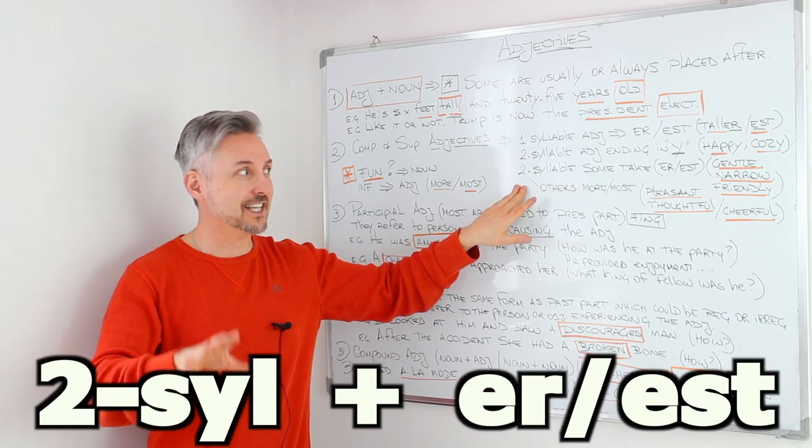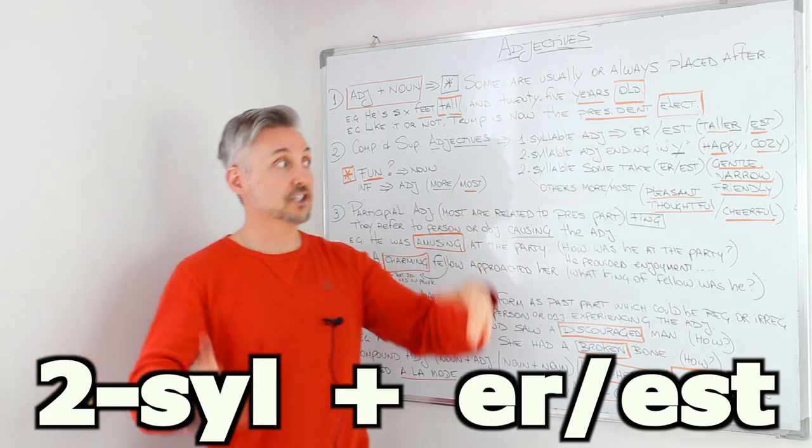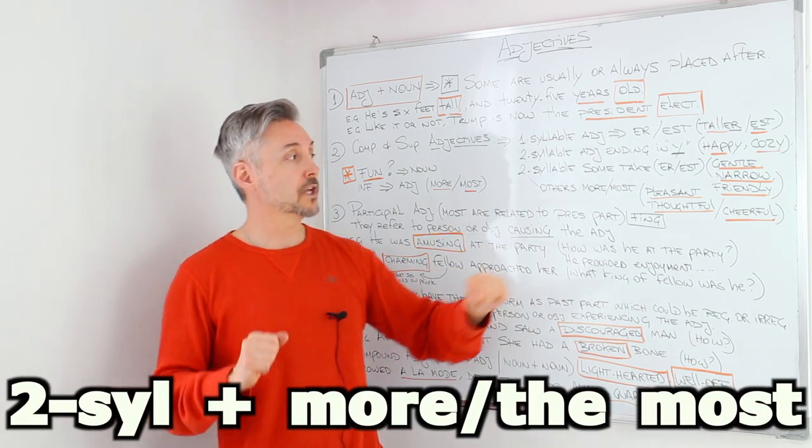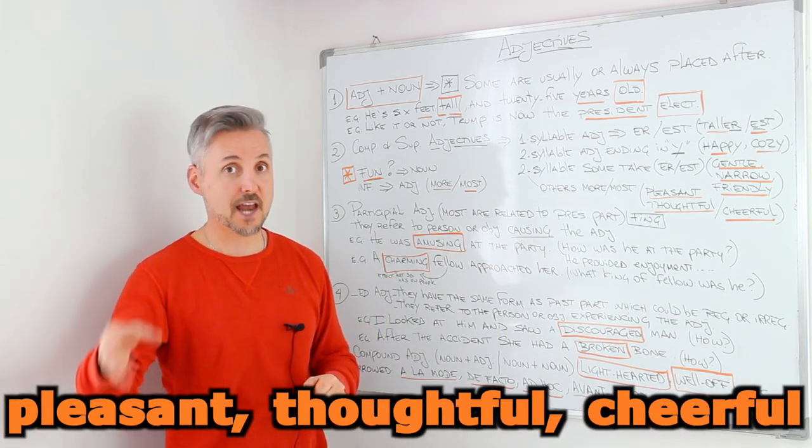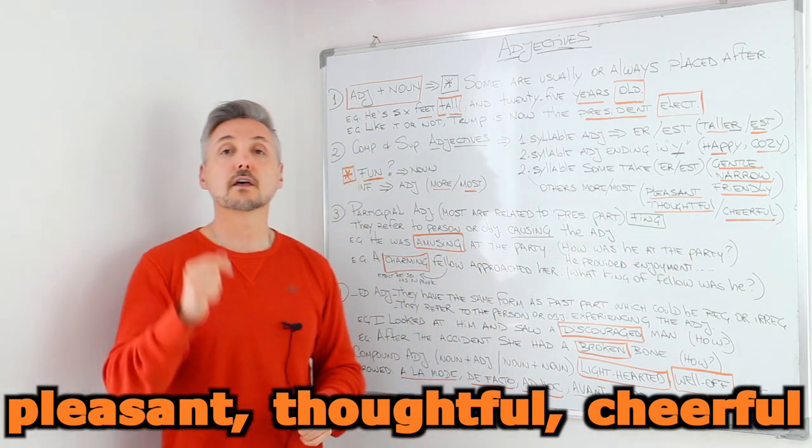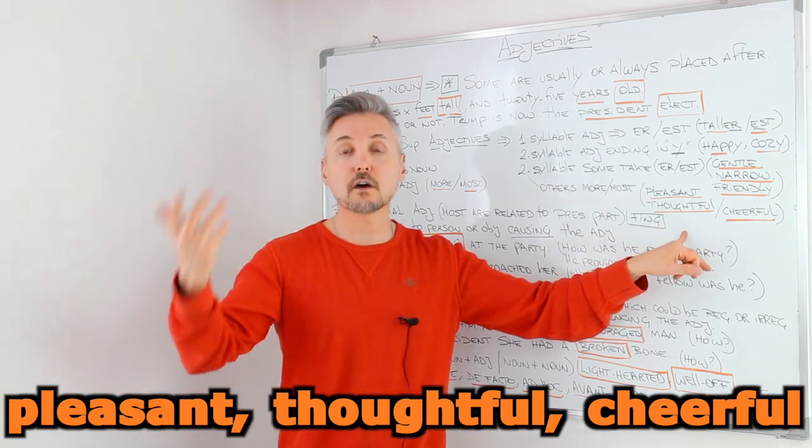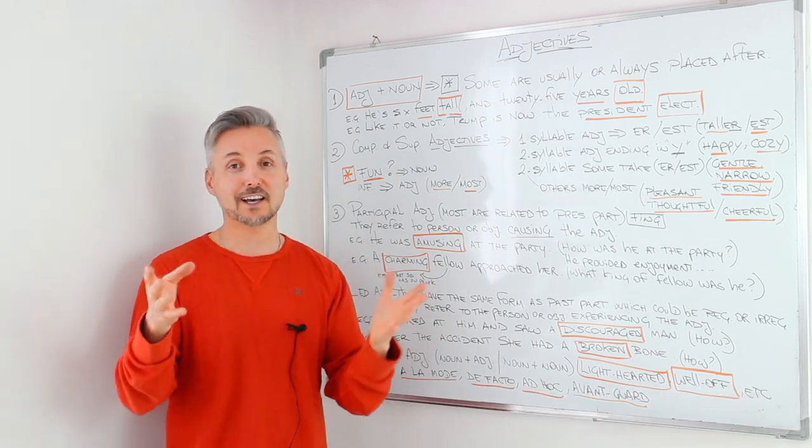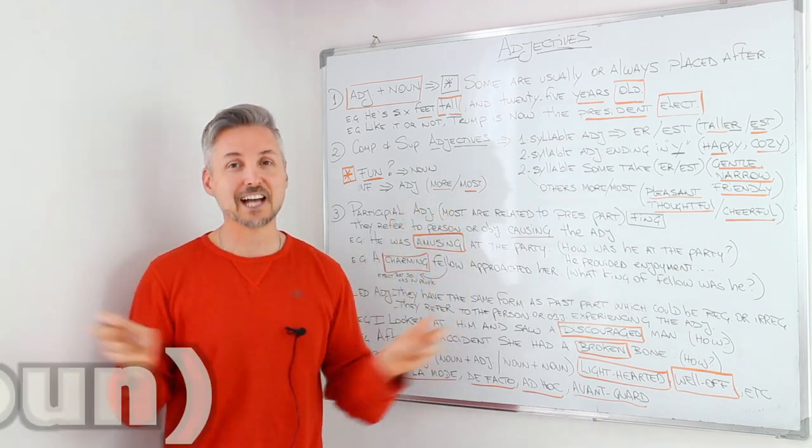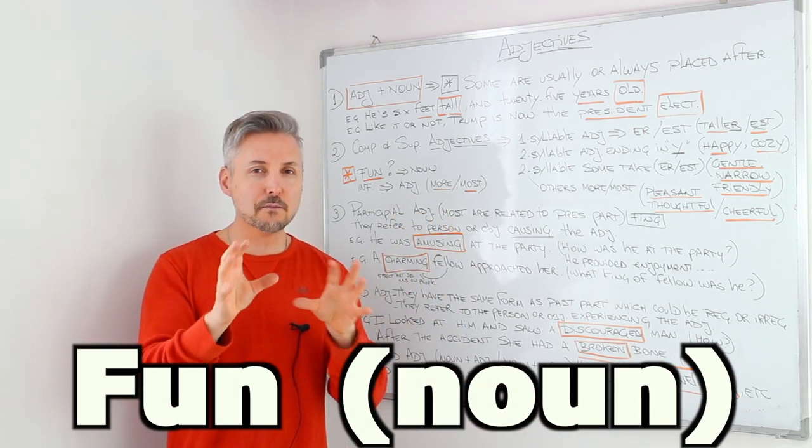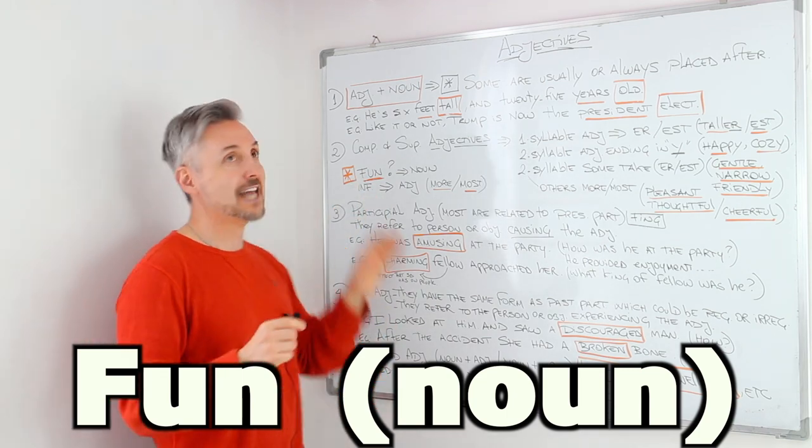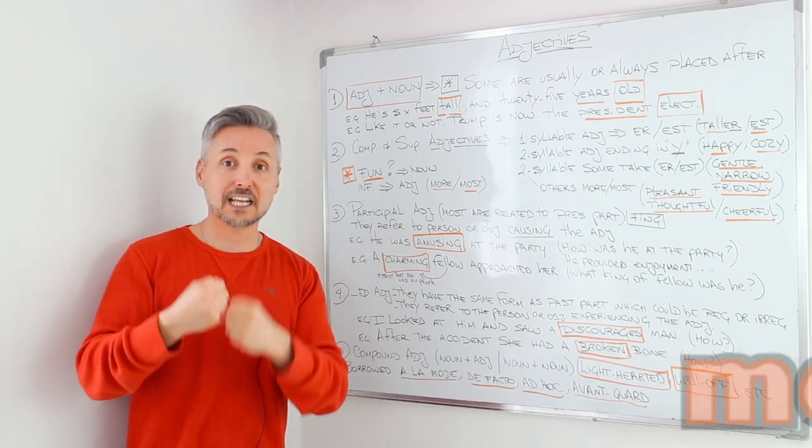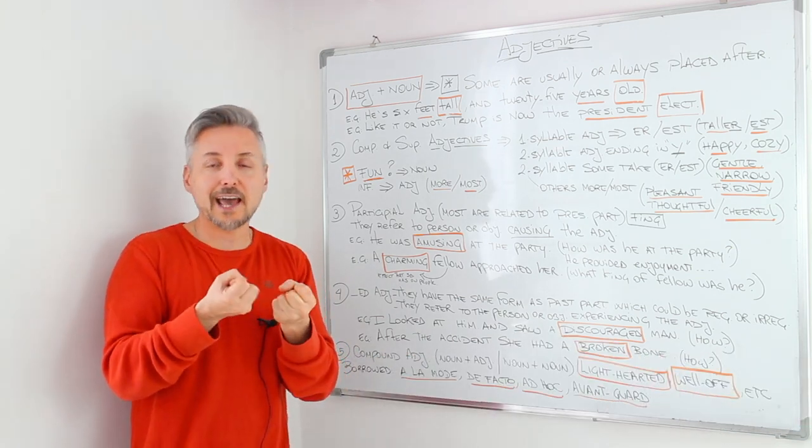Now the two-syllable adjectives. Some take ER or EST. Like gentle, narrow, friendly, etc. And others take more or the most. Like pleasant. We say more pleasant than. The most pleasant. Or thoughtful. More thoughtful than and the most thoughtful. Or cheerful, etc. Now there is another thing that I want to tell you about this. Which is the adjective fun. It's not an adjective. It's informally used as an adjective. But it's a noun. So we say more fun. Not funner than. Just recently has been introduced as an adjective. But it actually is born as a noun. Fun.